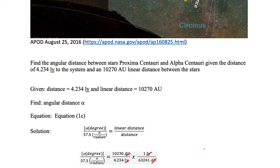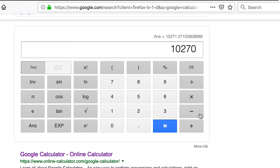Yes, 10270 multiply it by 1 and then divide by 4.234. So we need to multiply by 1 and divide by 4.234. And we hit the equal sign.